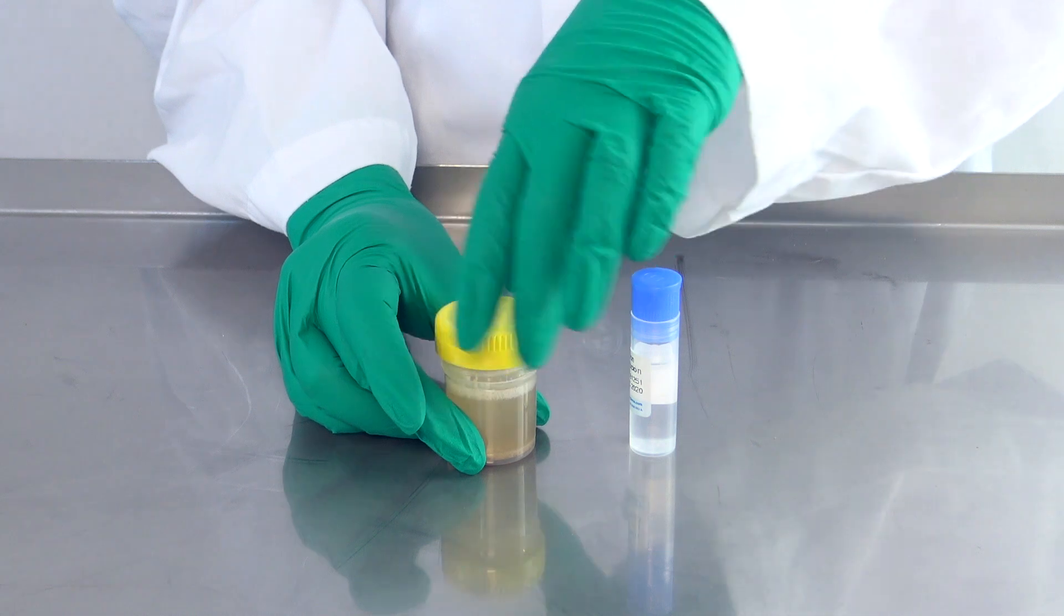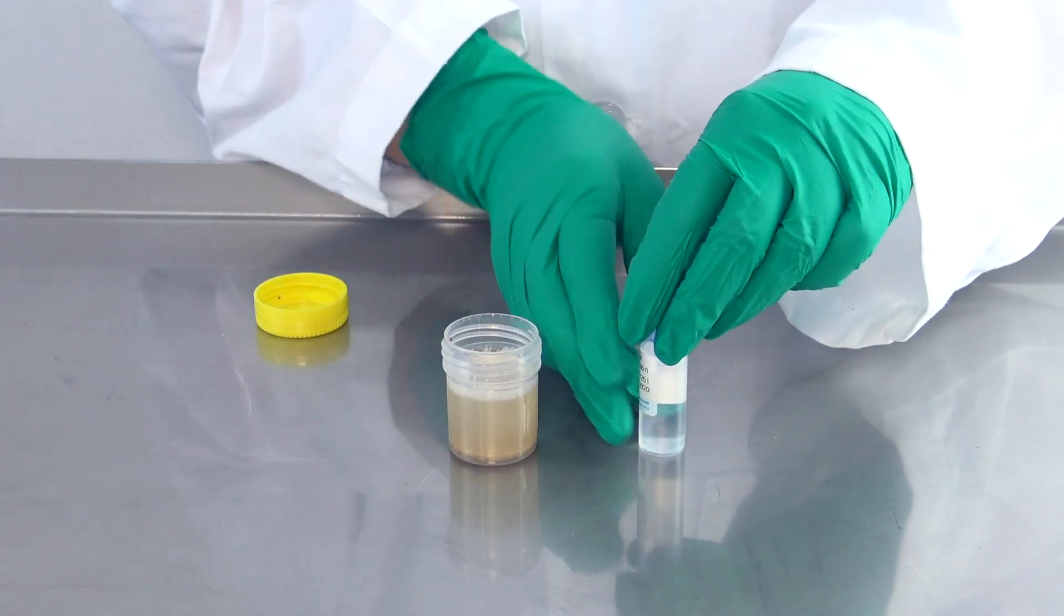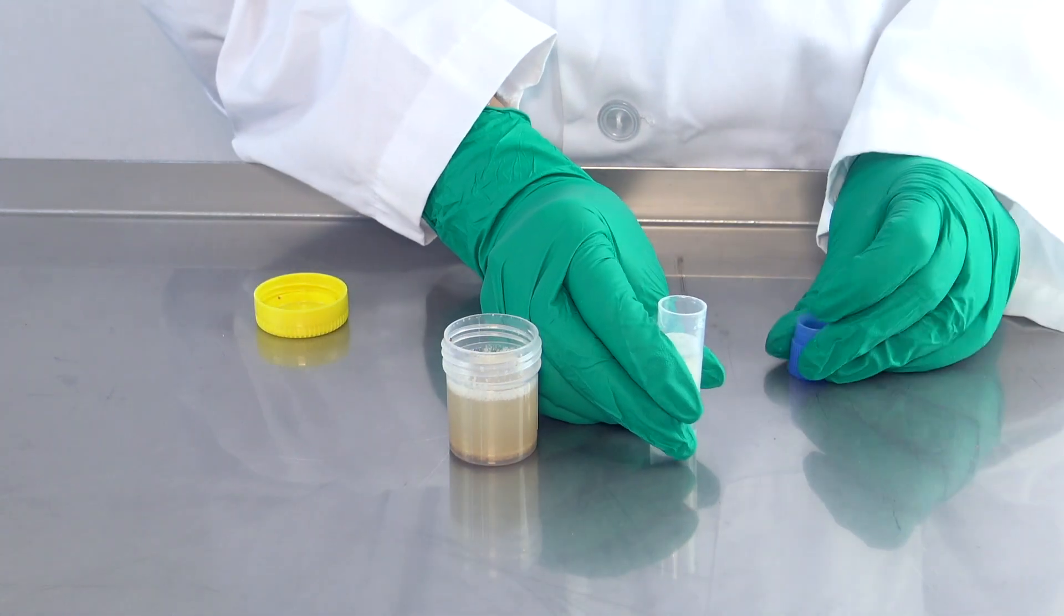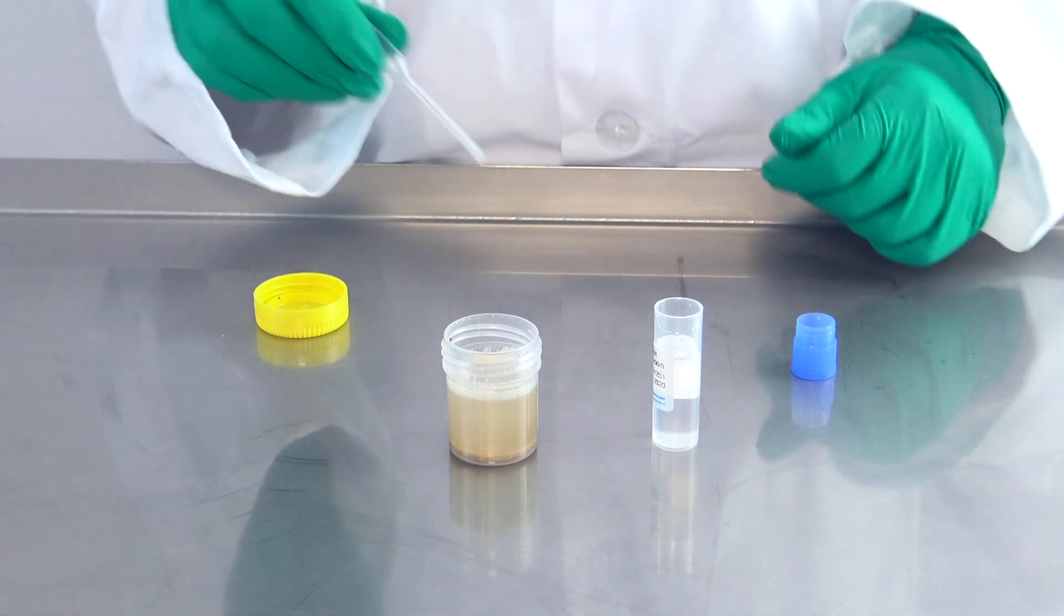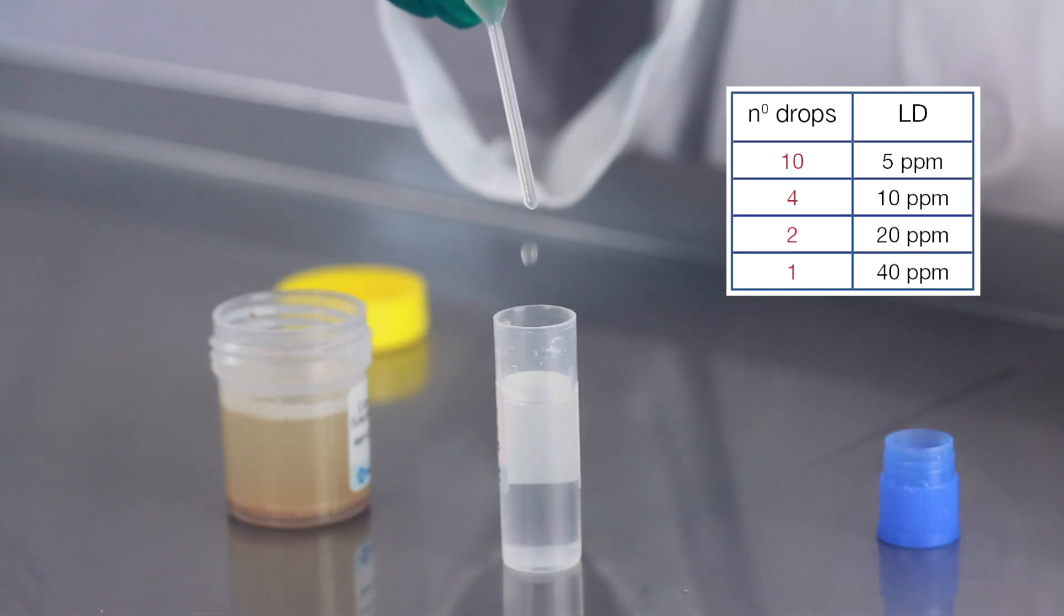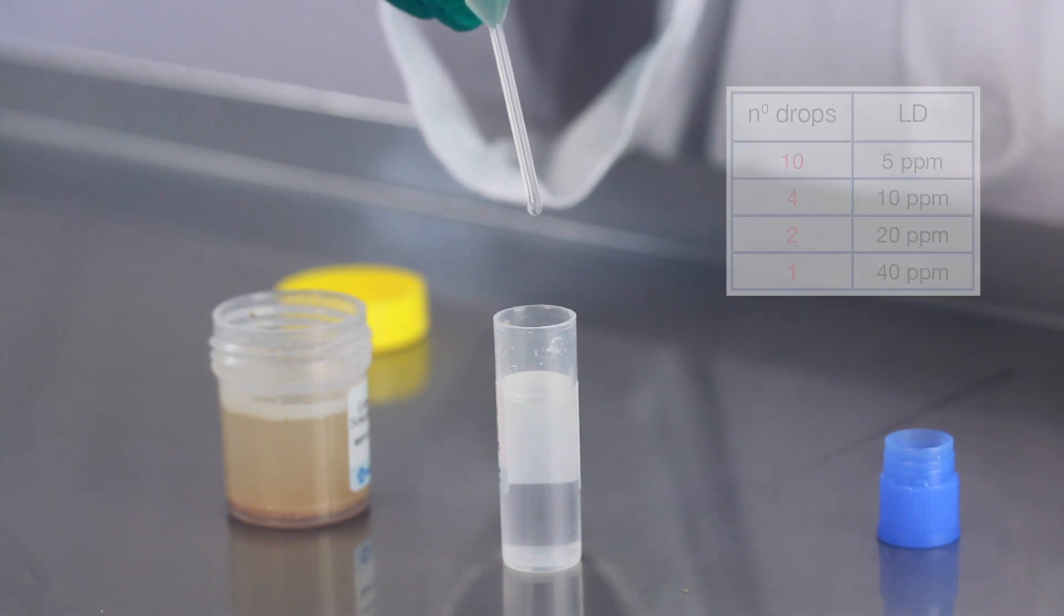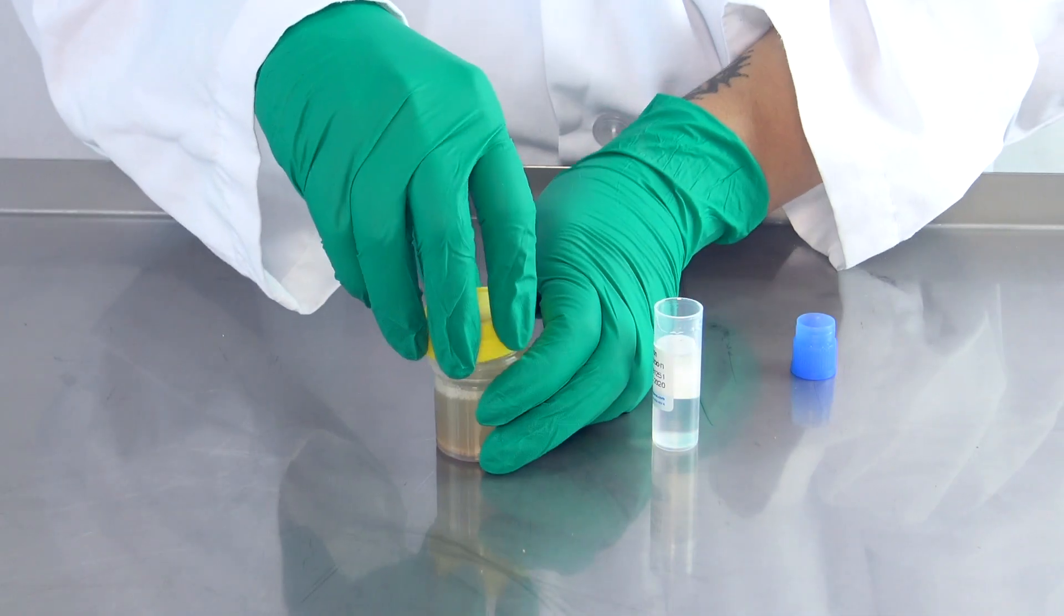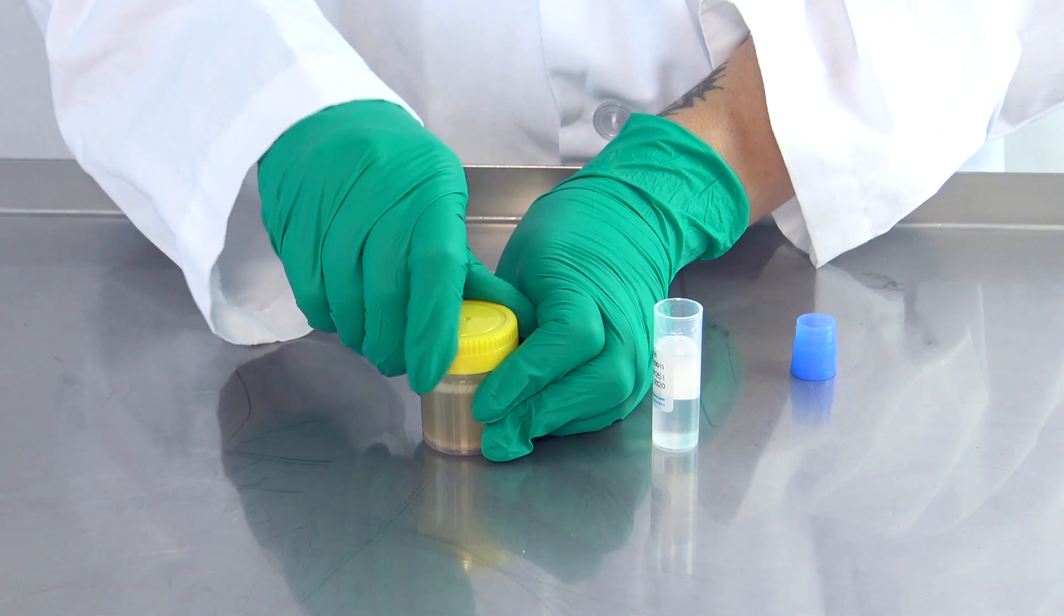Open the extraction bottle with the yellow cap and one dilution vial with the blue cap. Take a disposable plastic pipette and using the number of drops indicated on the manual, transfer the liquid from the extraction solution with the yellow cap to the dilution vial with the blue cap. Dispose of the used pipette.